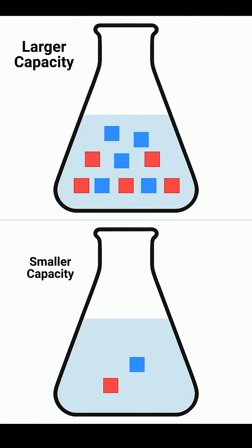If you keep adding strong base, eventually you'll use up all the HA, and once it's gone, there's nothing left to neutralize any more base. At that point, the buffer breaks down, and the pH will rise sharply.